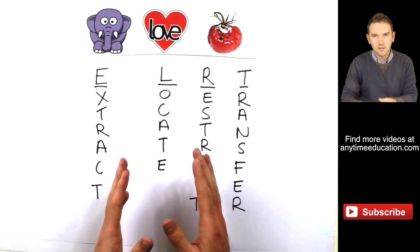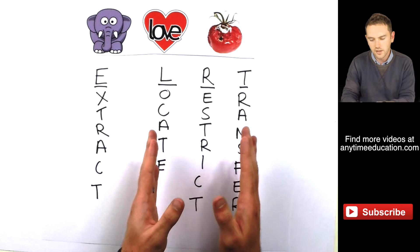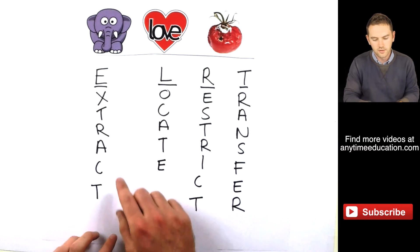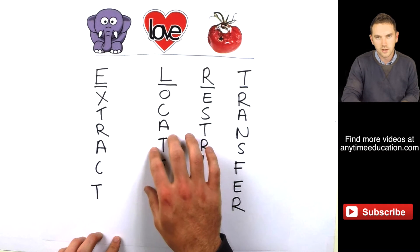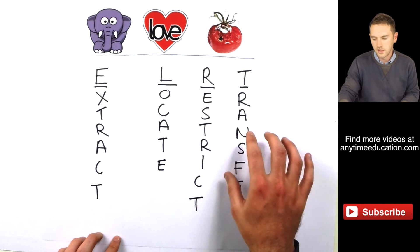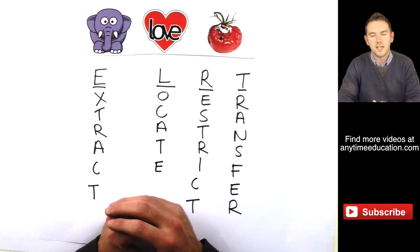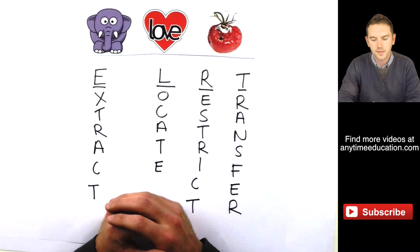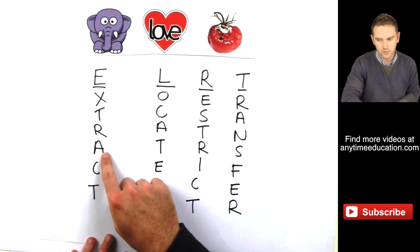Because you can't really do any of these remaining three until you've taken care of the extraction. And then we can locate, restrict, and then transfer. And all this relates to the genetic information in a cell. So today's video is going to be about the extraction process.